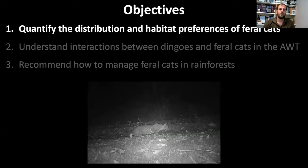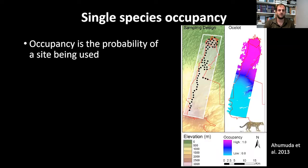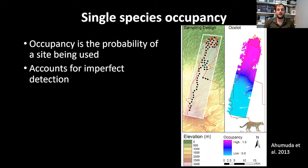To quantify distribution and habitat preferences I used single-species occupancy modeling. Occupancy represents the probability of a site being used by a particular species, and it accounts for imperfect detection — where an animal is present but not detected during a survey period. This is particularly relevant for camera traps given their narrow field of view.